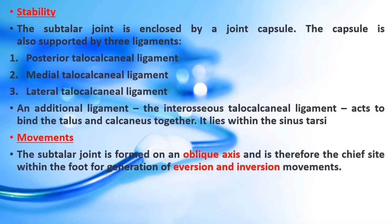Stability. The subtalar joint is enclosed by a joint capsule lined internally by synovial membrane and strengthened externally by a fibrous layer. The capsule is supported by three ligaments: the posterior, medial, and lateral talocalcaneal ligaments. An additional interosseous talocalcaneal ligament lies within the sinus tarsi — a small cavity between the talus and calcaneus — and is particularly strong, providing the majority of ligamentous stability to the joint.